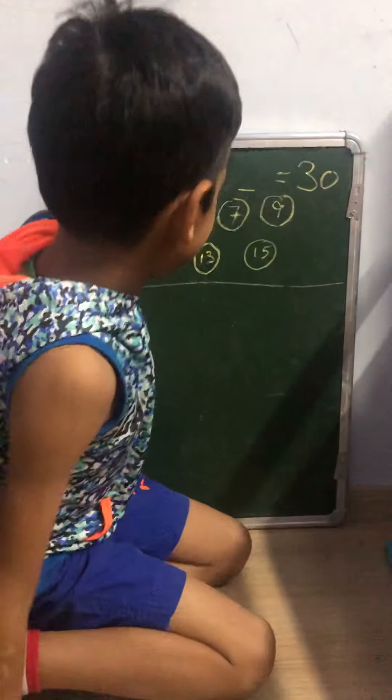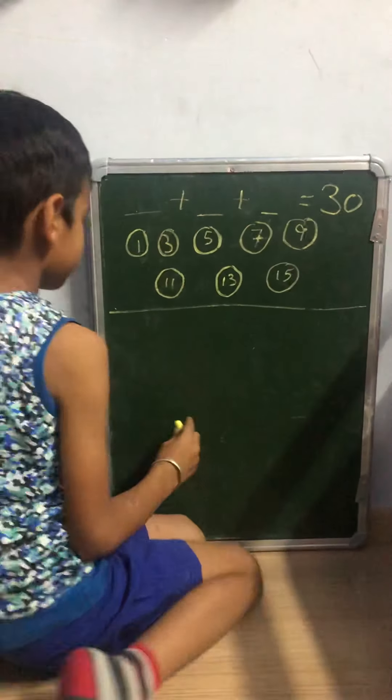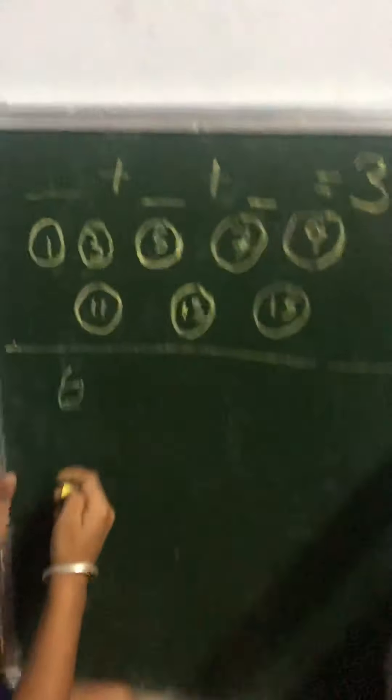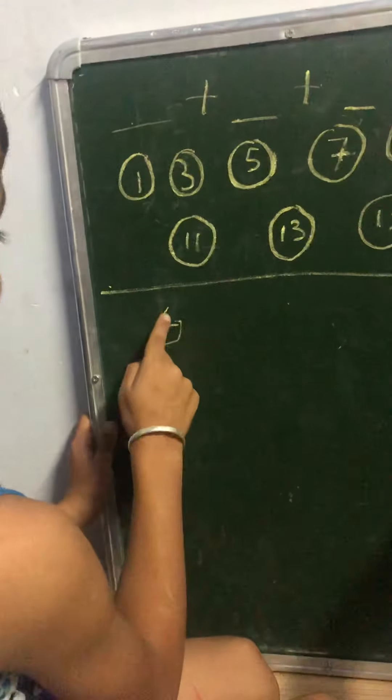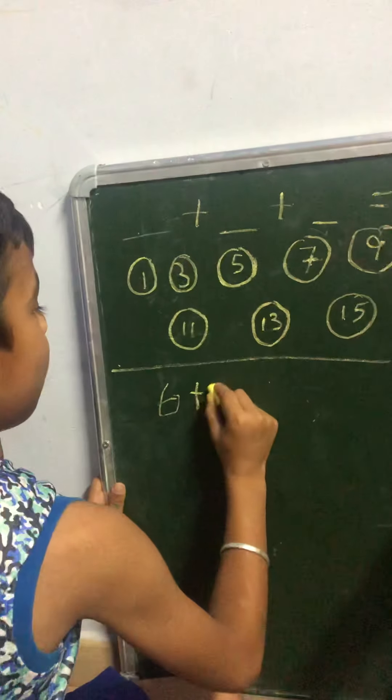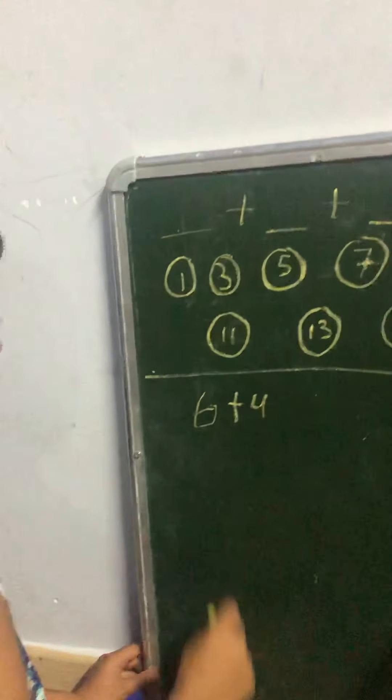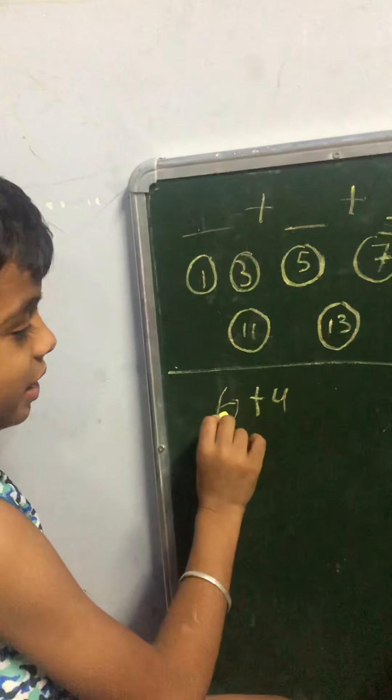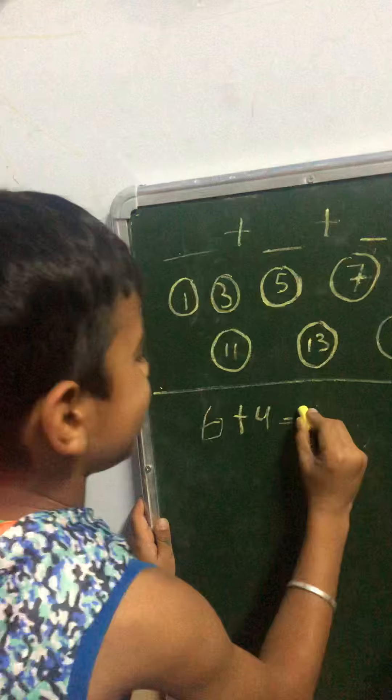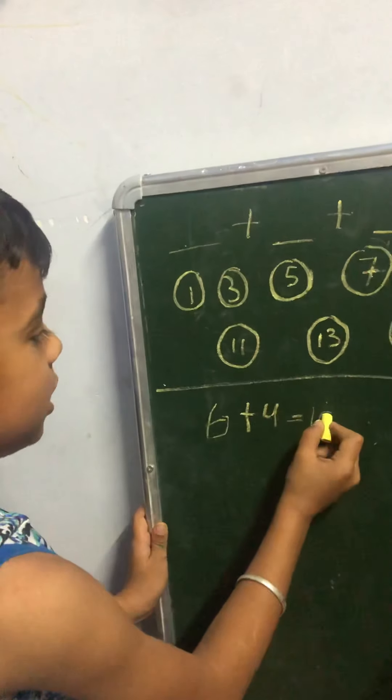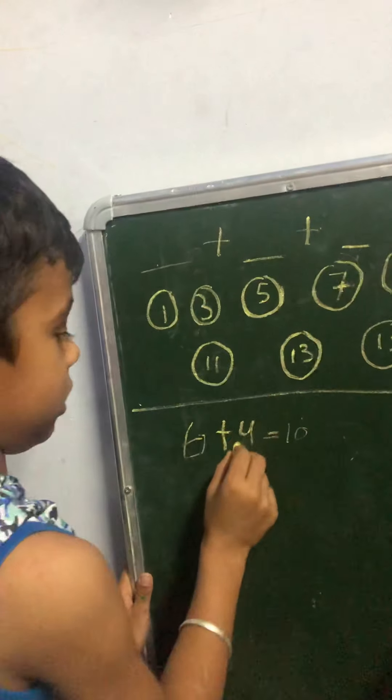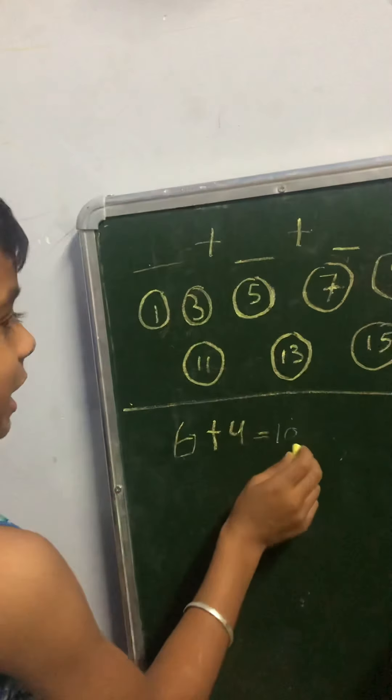I'll explain you something else first. 6 is an even number plus 4 is also an even number. Imagine this is E. E plus E is equal to 6 plus 4 is 10. So 10 is also an even number. You can write E. E plus E is equal to E.